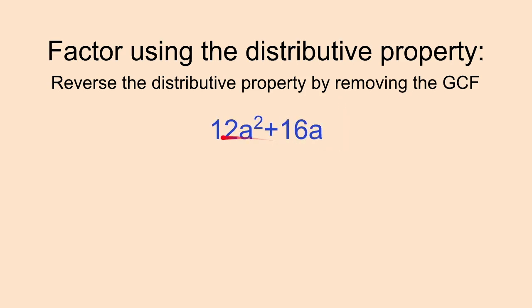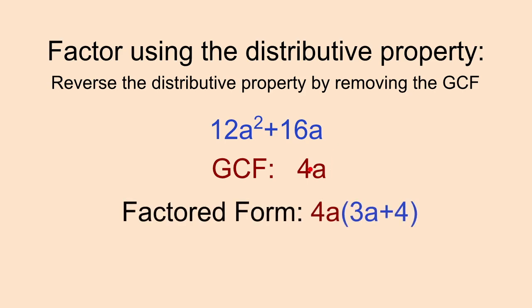Yesterday we started off with 12a² + 16a. We found that our GCF was 4a, so both of these terms have a 4 as a common factor, and then they also each have an a that we could remove. So to put it in factored form, we take that GCF and put it out front of our parentheses, and then we ask, if we remove that GCF, what would be left? So what would I have to multiply 4a by to return to this 12a²?